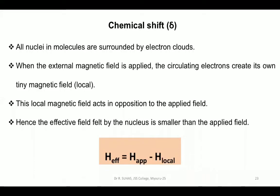Hello everyone. Today we will learn about chemical shift. Chemical shift is an important concept in NMR spectroscopy because it gives the value of a particular proton present in an organic molecule. Usually chemical shift is represented by the symbol delta.